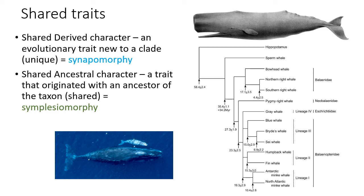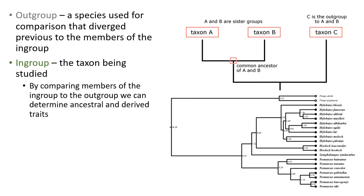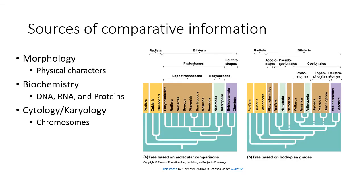We use an outgroup to help make comparisons. By looking at traits of the outgroup versus the ingroup of interest, characters shared with the outgroup are taken to be ancestral traits. Anything new and different from the outgroup would then be considered a derived trait.